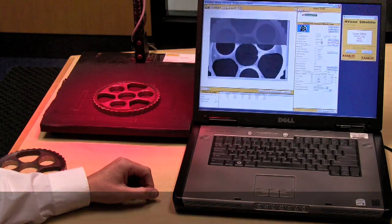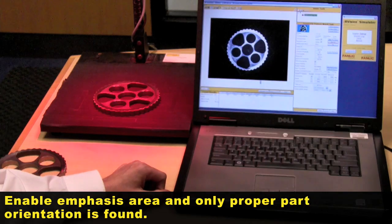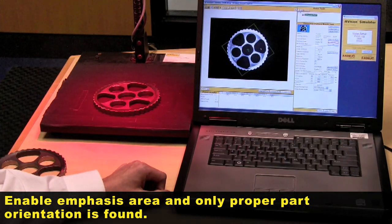I'm going to emphasize that area shown here in blue, then do a snap and find. There it finds a part in only one orientation.